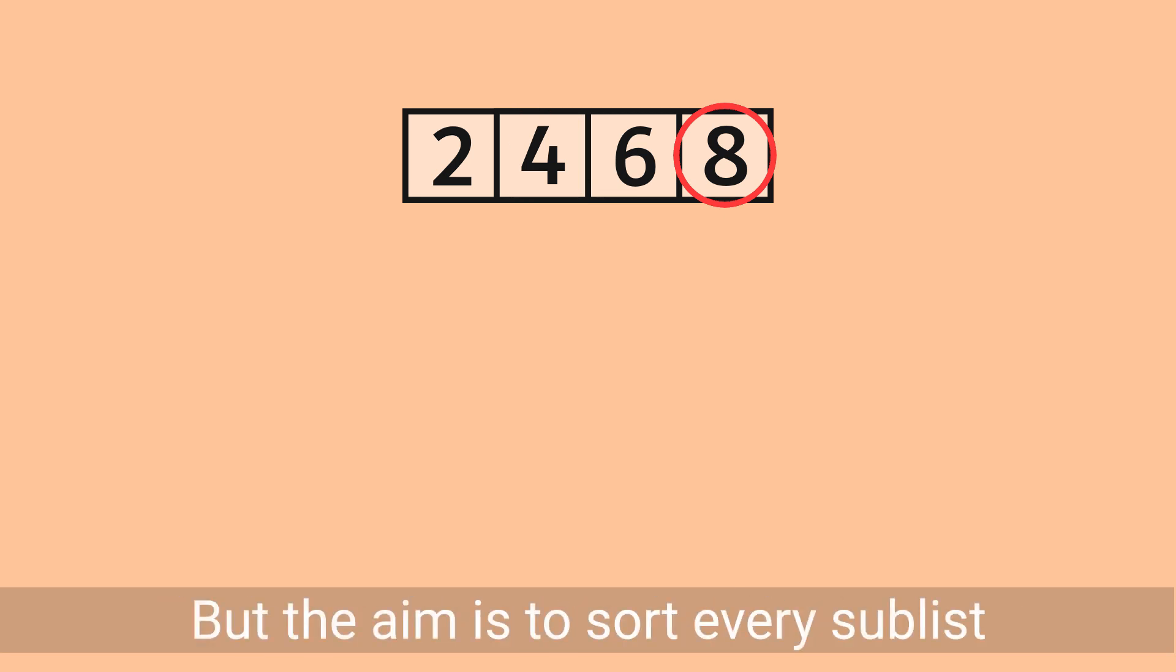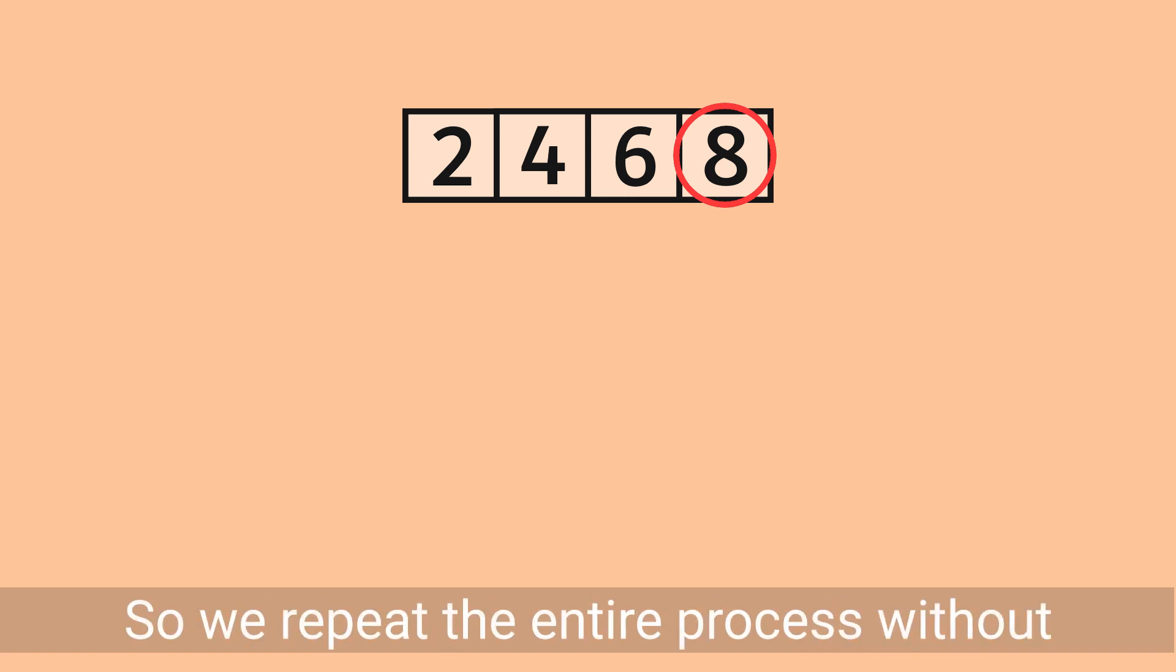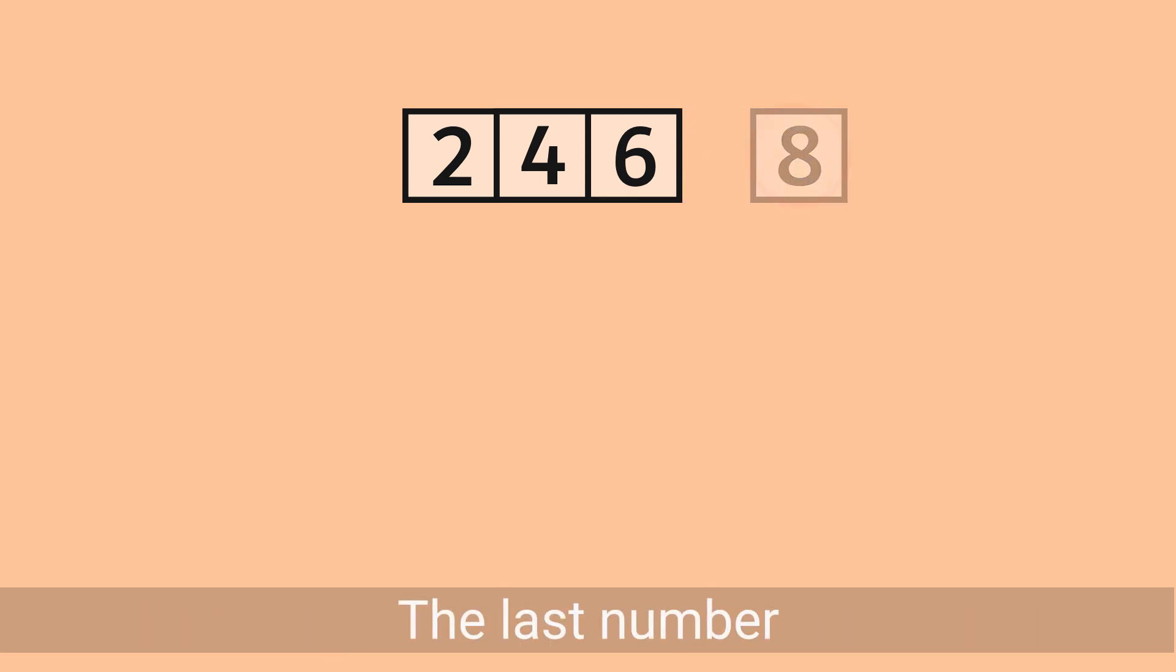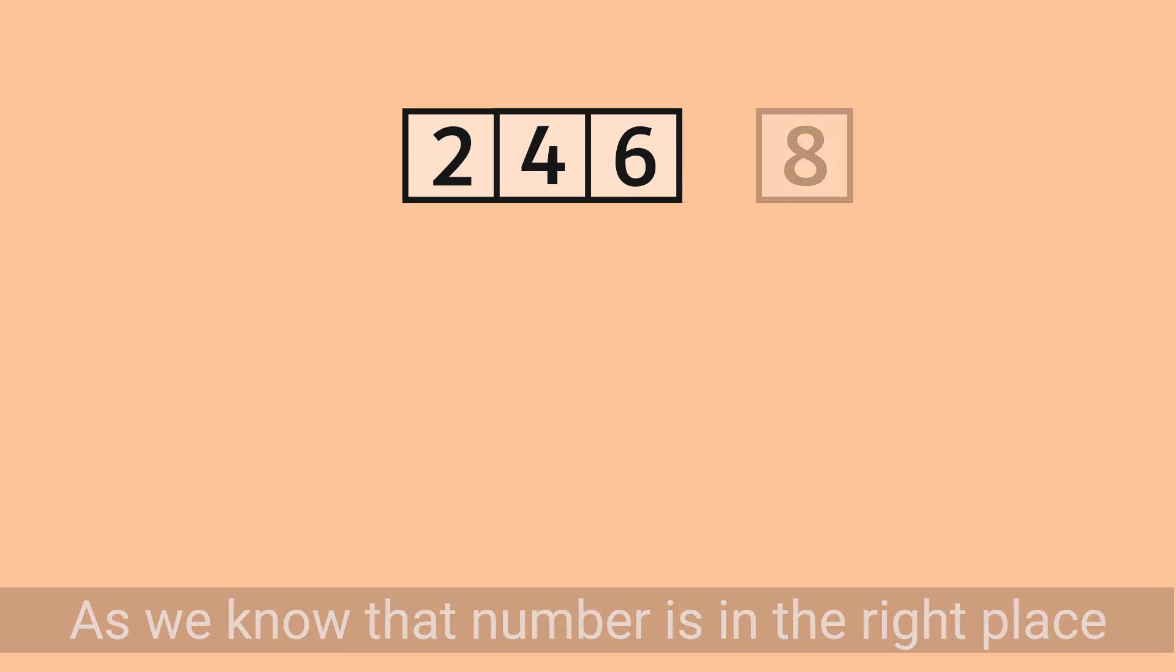But the aim is to sort every sublist. And although this list does happen to be sorted, we don't know for sure if it is sorted. So, repeat the entire process without the last number, as we know that number is in the right place in the sublist.